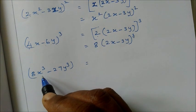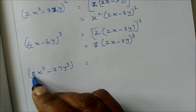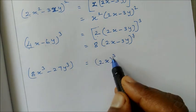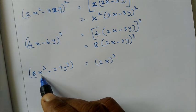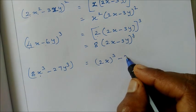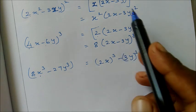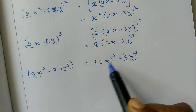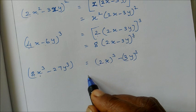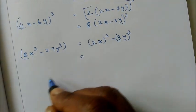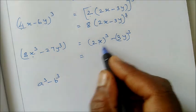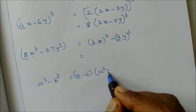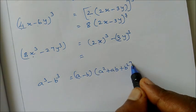Here we do 8x cube minus 27y cube. 8 is 2 cube. 2x whole cube. This is 2x whole cube minus 3y whole cube. This formula is A cube minus B cube, which equals A minus B into A square plus AB plus B square. This identity is used.